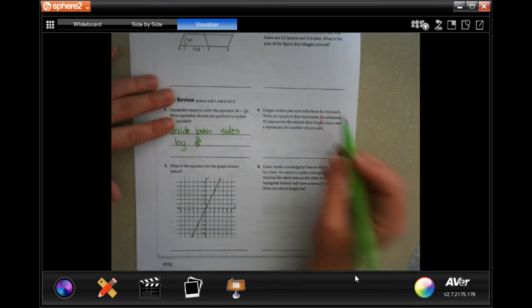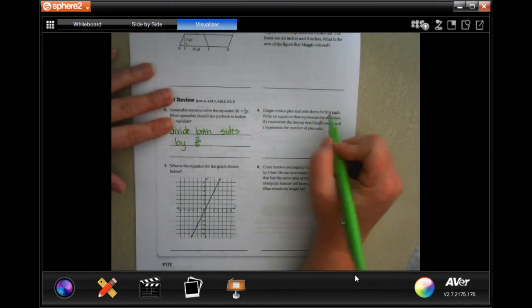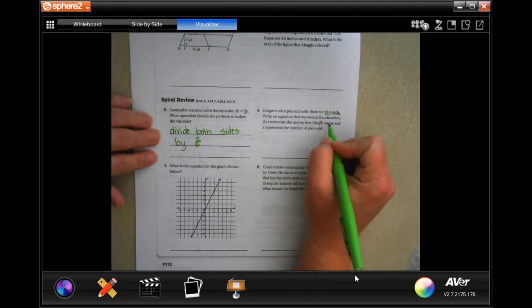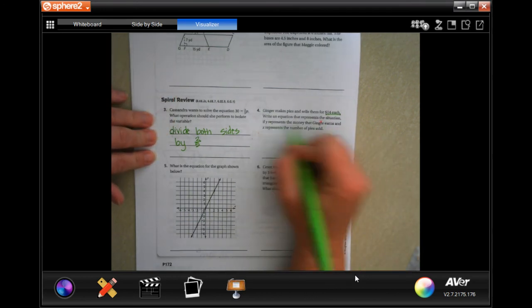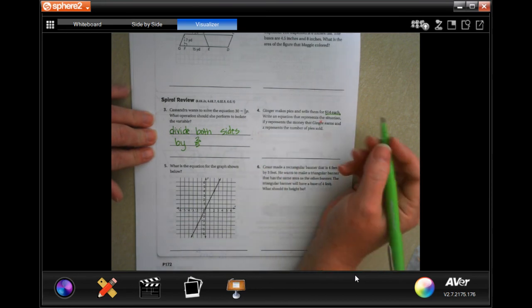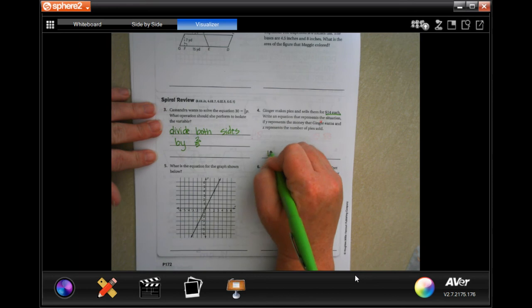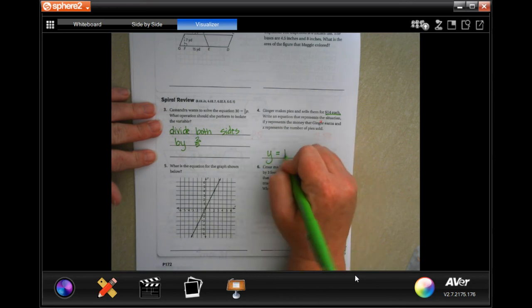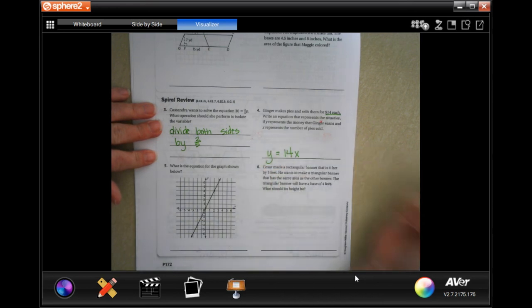All right, Ginger makes pies and sells them for $14 each. Write an equation that represents the situation if Y represents the money that Ginger earns, and X represents the number of pies sold. Well, Y would equal 14 times however many pies she sold.